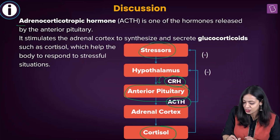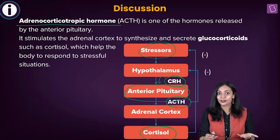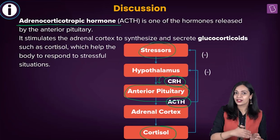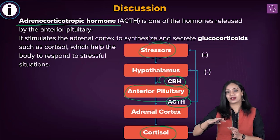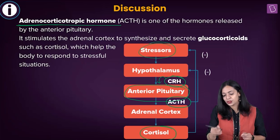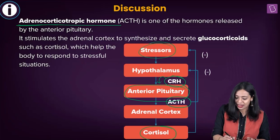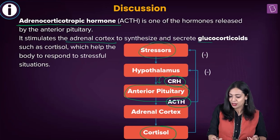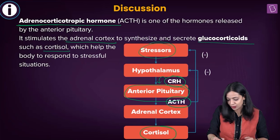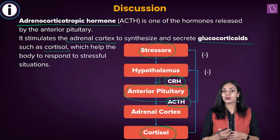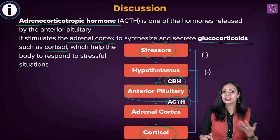ACTH stands for adrenocorticotropic hormone. It's already clear from the name — 'adrenocorti' is referring to the adrenal cortex. When ACTH is produced by the anterior pituitary, it will stimulate the adrenal cortex to synthesize as well as secrete glucocorticoids such as cortisol. After being secreted into the bloodstream, cortisol will help deal with the stressful situation.